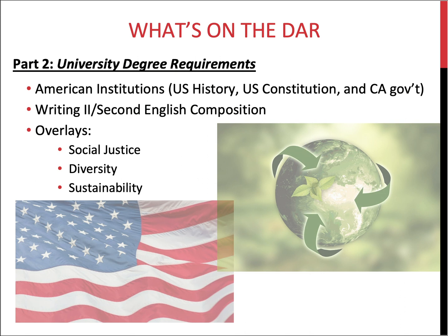There are three areas of university degree requirements that need to be completed. The first is American Institutions, which consists of U.S. History, the U.S. Constitution, and California Government. Some courses can count for more than one of these areas, but to complete the requirement you will need to take at least two courses.